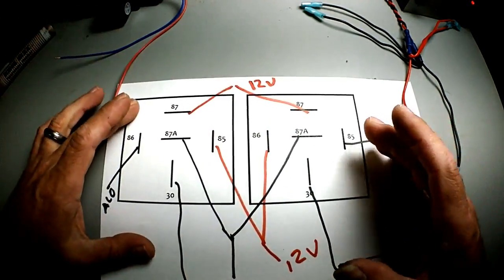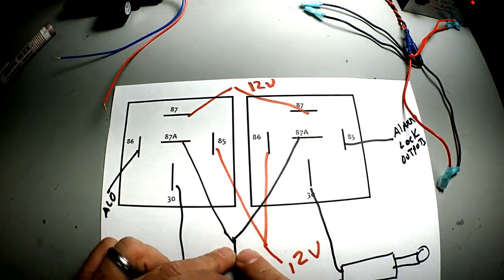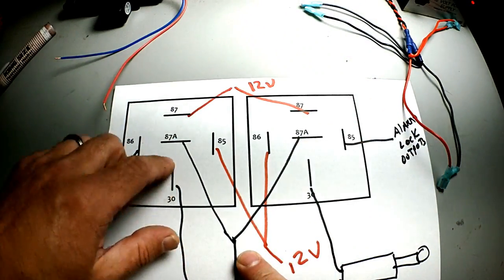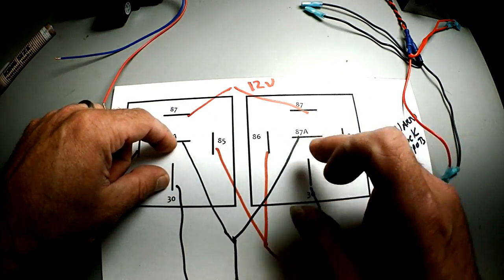These four go to 12 volts. And how this works is these two rest at ground. Meaning 30 is going to rest at ground when this one gets pulsed.